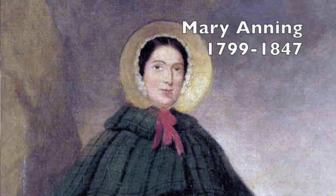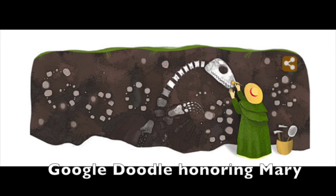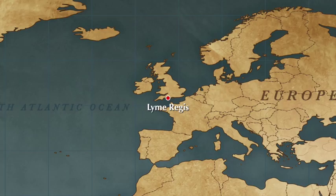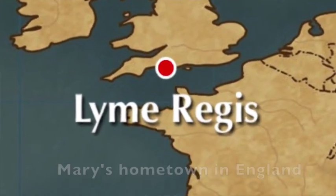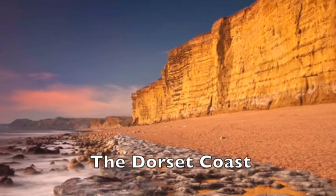who was one of the first serious fossil hunters who started to put together this ancient world that had some creatures living in it that weren't alive today. She was collecting along the Dorset Coast, which is basically a series of cliffs right along the ocean.